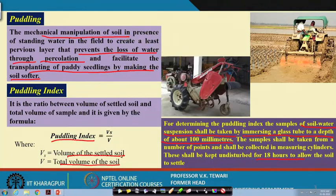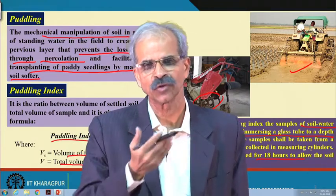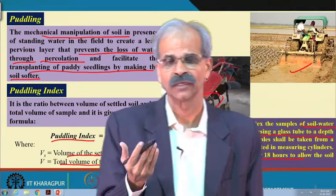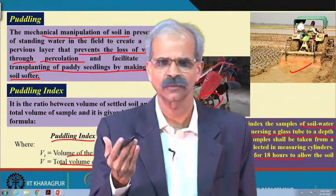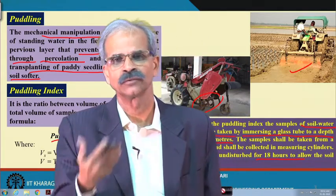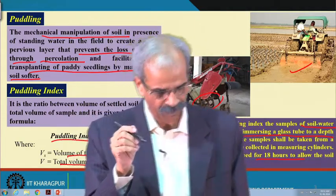This puddling index talks of the quality of the puddle. The operation is done by a power tiller with rotary blades. From experience, a puddling index of about 0.60 to 0.65 — that is, 60 to 65 percent — will be acceptable for the condition in which the seedlings should be planted.